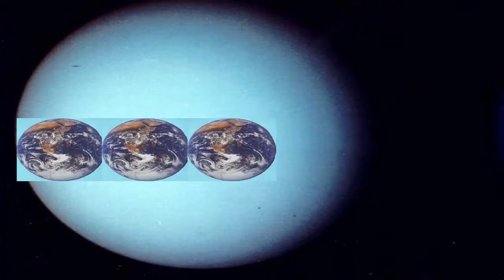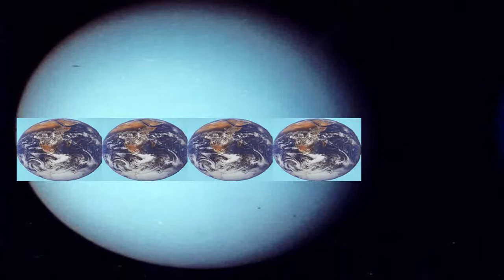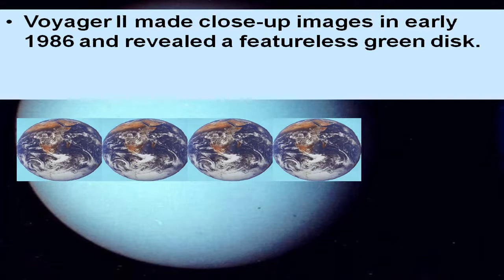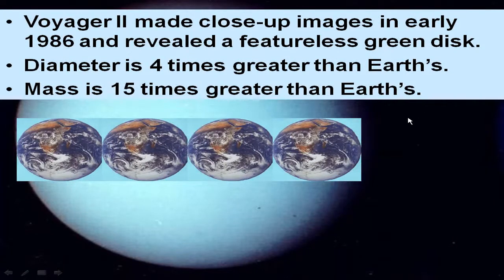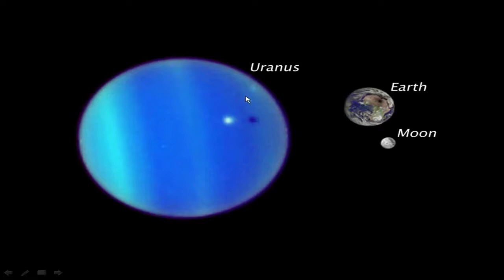Looking at the planet, we find that its diameter is just about four times the diameter of the Earth, and its mass is 15 times greater than the Earth's mass, yet its density is much less than the Earth. The Voyager picture showed no features — just a green-bluish disc in 1986, with no particular bands or storm features. Here's a comparison of Uranus to the Earth and the Earth's moon, and we can also see the moon Ariel and its shadow on the surface of Uranus.